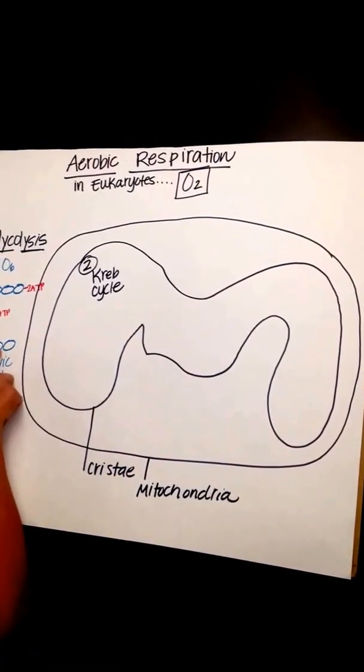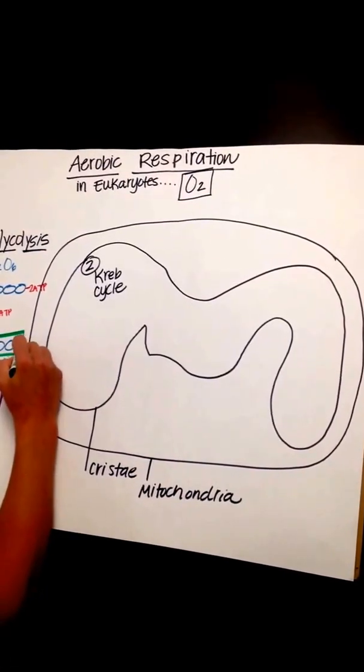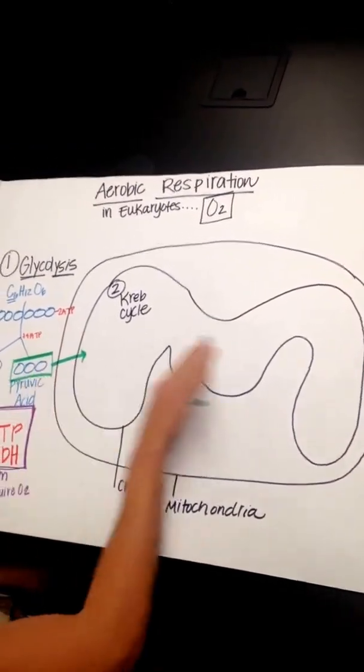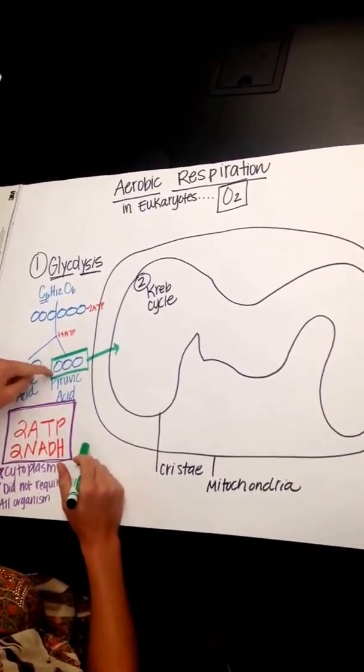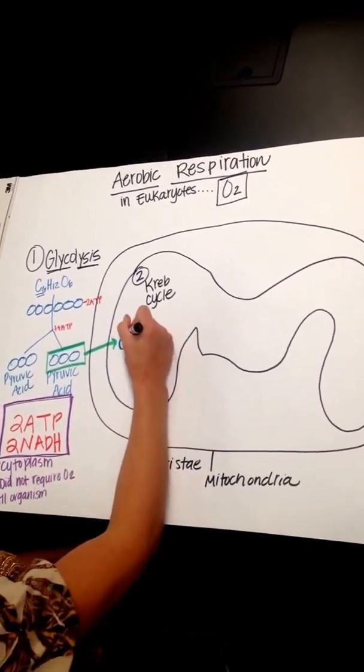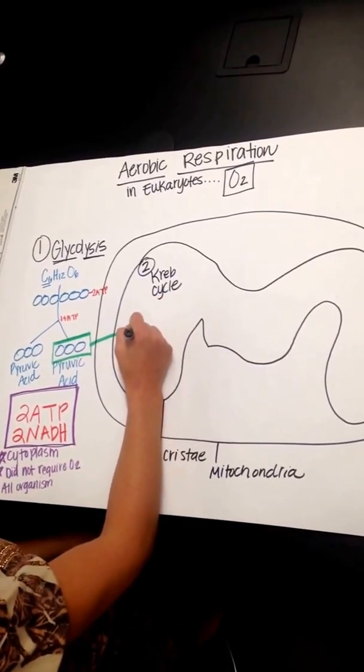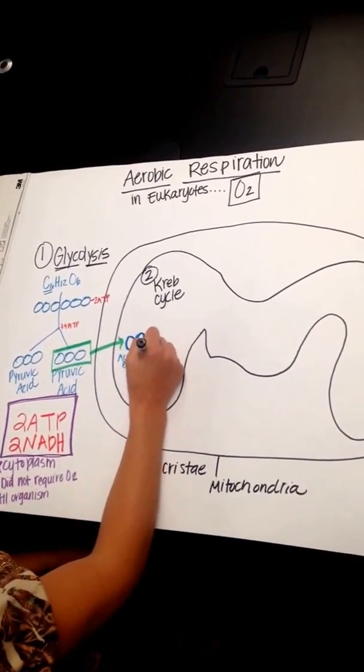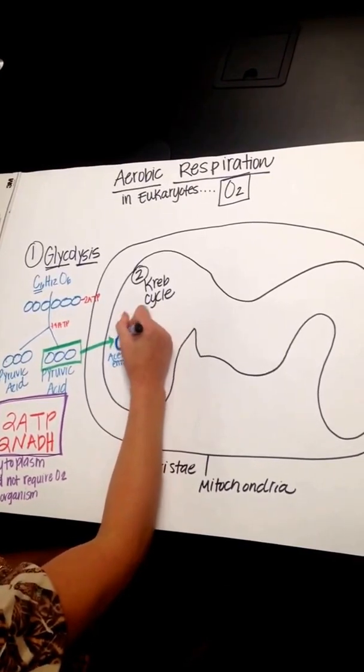Well, these pyruvic acids or pyruvates have to get inside the mitochondria and they can only do so with oxygen. So from now on, inside the mitochondria we need oxygen. Well, in order to do that, this pyruvic acid has to become acetyl-CoA, which is a two-carbon molecule. So this is acetyl-CoA. Acetyl-CoA now will start the Krebs cycle.